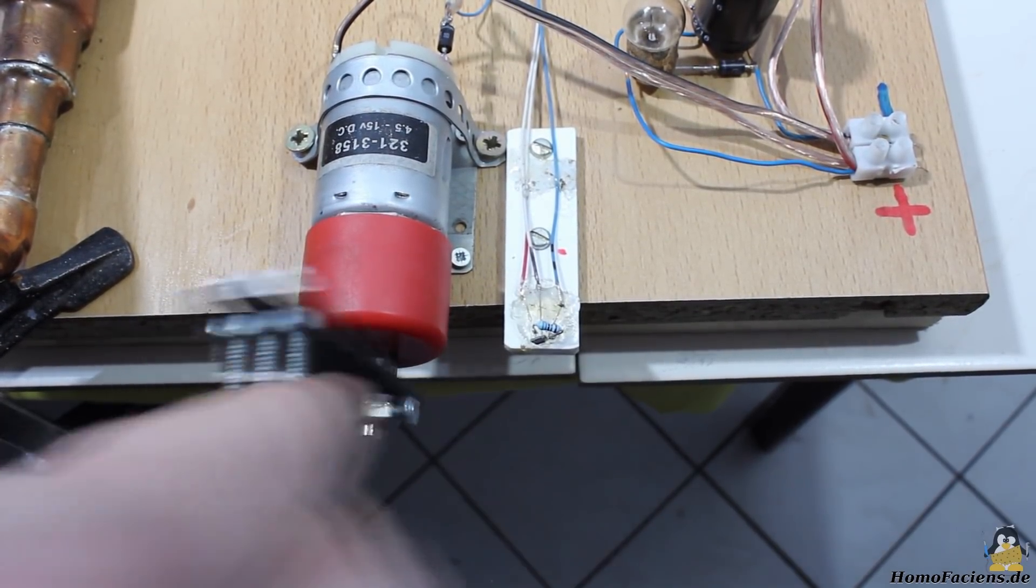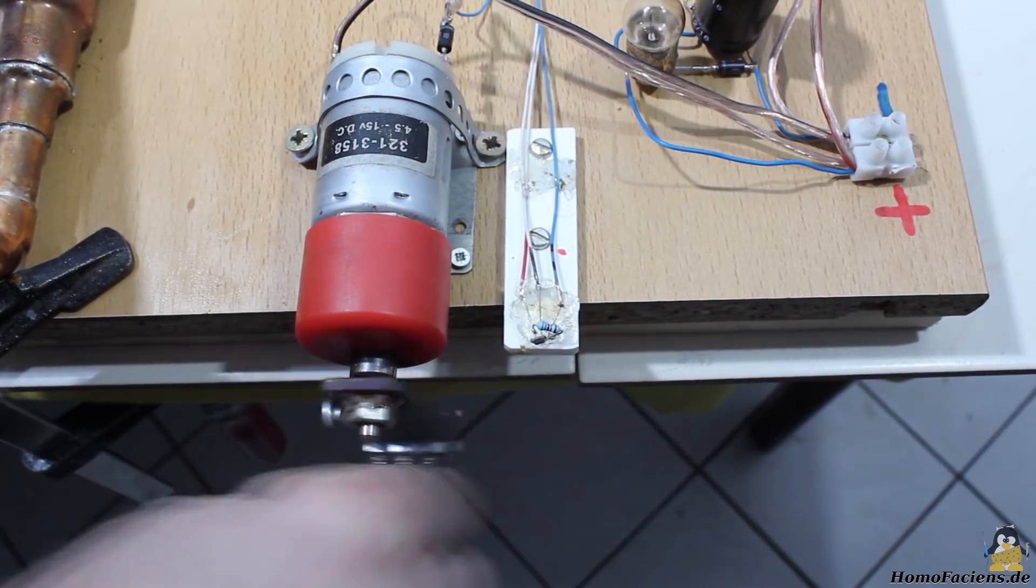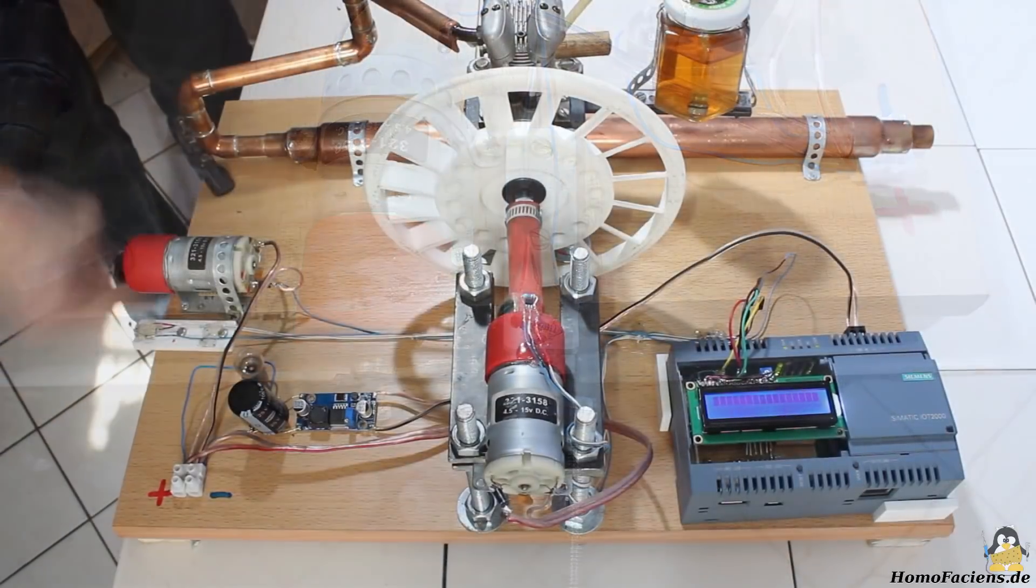While turning the crank, the mechanical power I am generating is turned into electric power through the DC motor that is operating as electric generator.